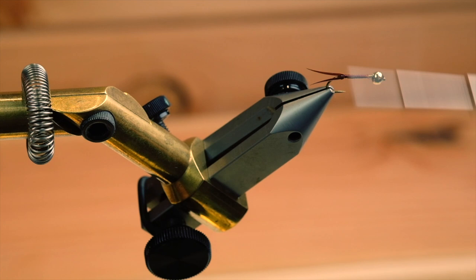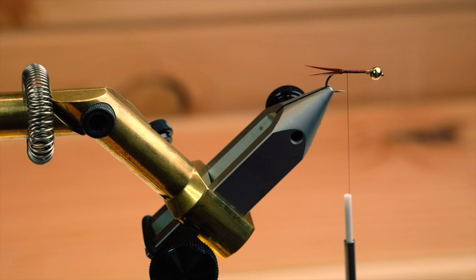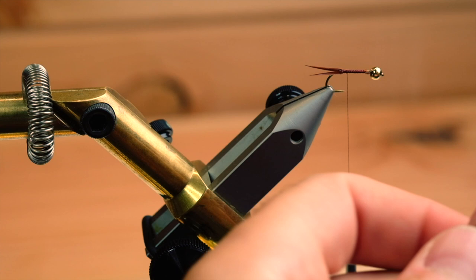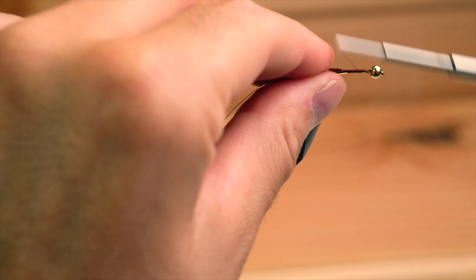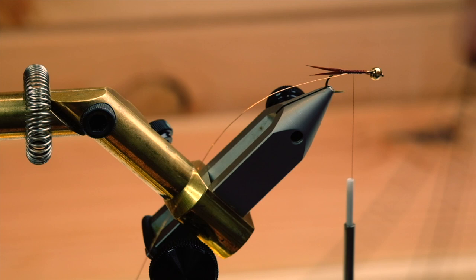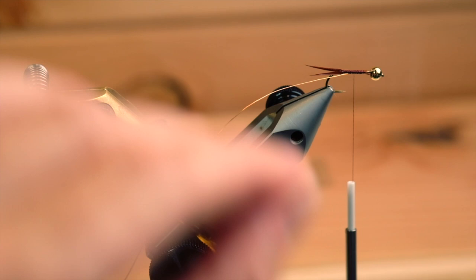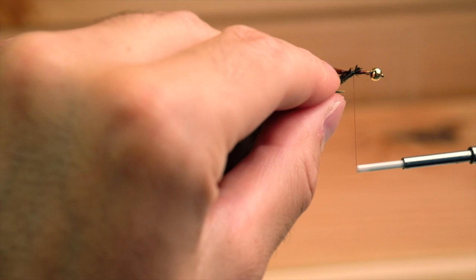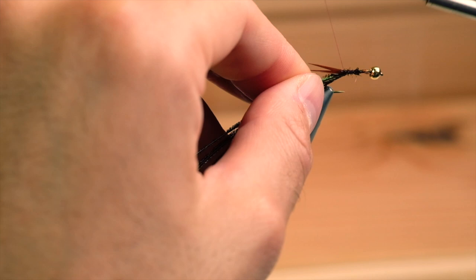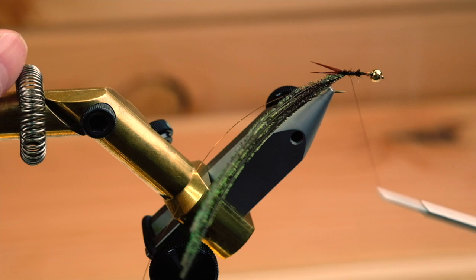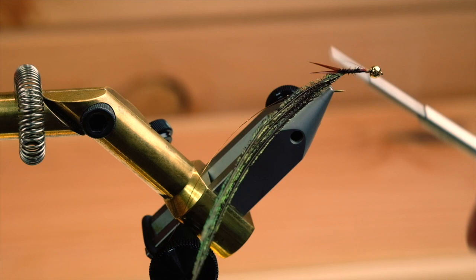Now we have our tail and we're going to use a little ribbing on the body, some copper wire. Tie in the wire and then use three peacock hurls. The tips are quite brittle so I'll snip about half inch off the tip. Tie it in underneath, advance to the back, all the way, tie it down, come forward again. Get a hold of them with a couple of turns.